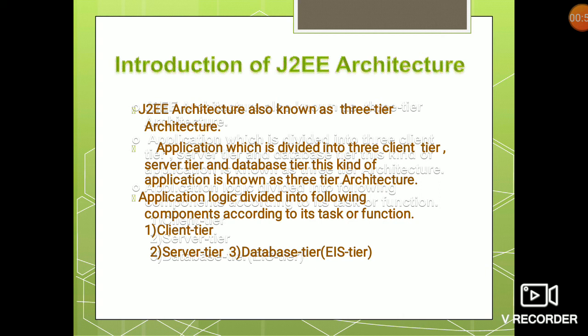How the video will be shown to you, and how all the other suggested videos will be shown to you, is the work of the server tier. From where the actual video content will be fetched and shown to the user is the work of the database tier. An application divided into client tier, server tier, and database tier is known as a three-tier architecture.